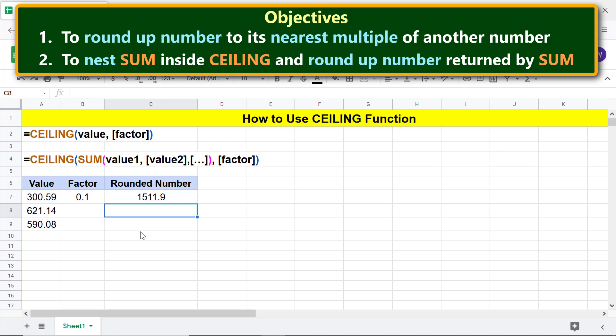There you go! CEILING has rounded up the number returned by SUM, which is 1511.81.